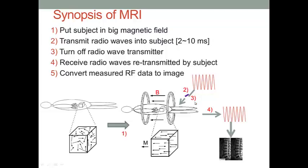Then in step 3, we will turn off the radio wave transmitter. After the external radio wave transmit is turned off, then the human body will retransmit the radio wave to outside from the human body. Then we have some machine to measure the RF data and convert the RF data to image.